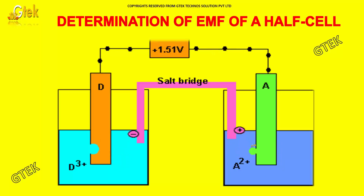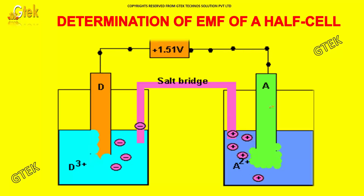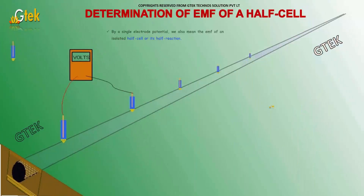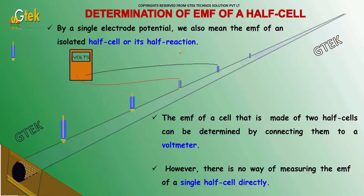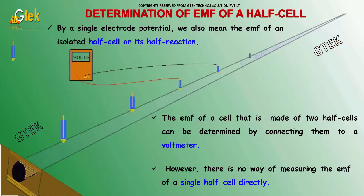Termination of EMF of a half cell. By a single electrode potential, we also mean the EMF of an isolated half cell or its half cell reaction, also called a half reaction. The EMF of a cell made of two half cells can be determined by connecting them to a voltmeter. However, there is no way of measuring the EMF of a single half cell directly.